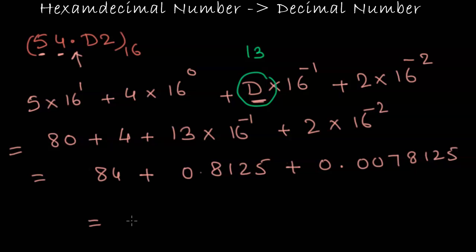So adding all of this we have 84.8203125 and hence this is my decimal number equivalent of 54.D2 in its hexadecimal form.